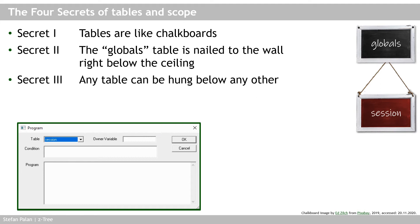You can change the table a program runs in at any time — for example, switching to the session table. If I create a new variable called 'level' and set it equal to one in a program running in the subjects table, Z3 writes this new information onto the subjects table chalkboard. But how do I reach the globals table? How can I change what is recorded on that chalkboard? That brings us to Secret four: scope operators.